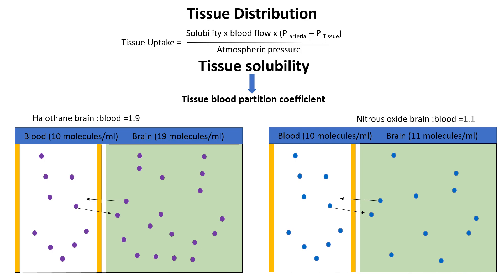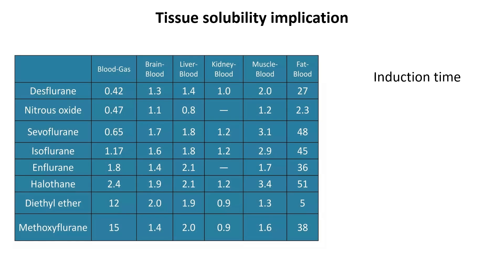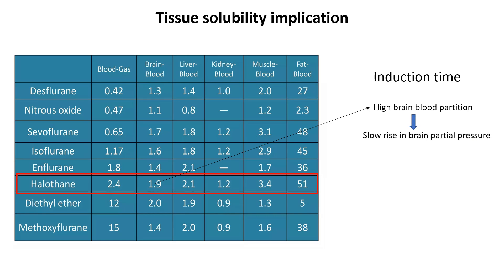Nitrous oxide has a brain-blood partition coefficient of 1.1. The solubility of anesthetics has two important implications. First, anesthetics like halothane with a high tissue-blood coefficient are absorbed more, requiring prolonged time for the partial pressure in tissues like the brain to equilibrate with blood, which prolongs induction time. An anesthetic with a low tissue-blood partition coefficient leads to a faster increase in the brain's anesthetic partial pressure, resulting in rapid onset of anesthesia and more rapid elimination when administration is stopped. However, most anesthetics have similar partition coefficients, so this makes little difference in induction time.